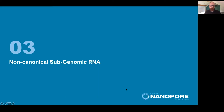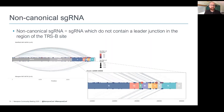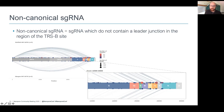We can also look at non-canonical subgenomic RNAs — subgenomic RNAs which do not contain a leader junction in the region of a TRS-B site, yet are still produced from these genome regions. In a plot of the SARS-CoV-2 genome, each dot represents a detected non-canonical subgenomic RNA, where dot size indicates read count and color indicates number of samples. There are clearly recurrent non-canonical subgenomic RNAs being produced, reproducible in the Glasgow dataset. Zooming into the three-prime end, many of these are found around ORF start sites, potentially indicating stochastic RNA polymerase template switching.